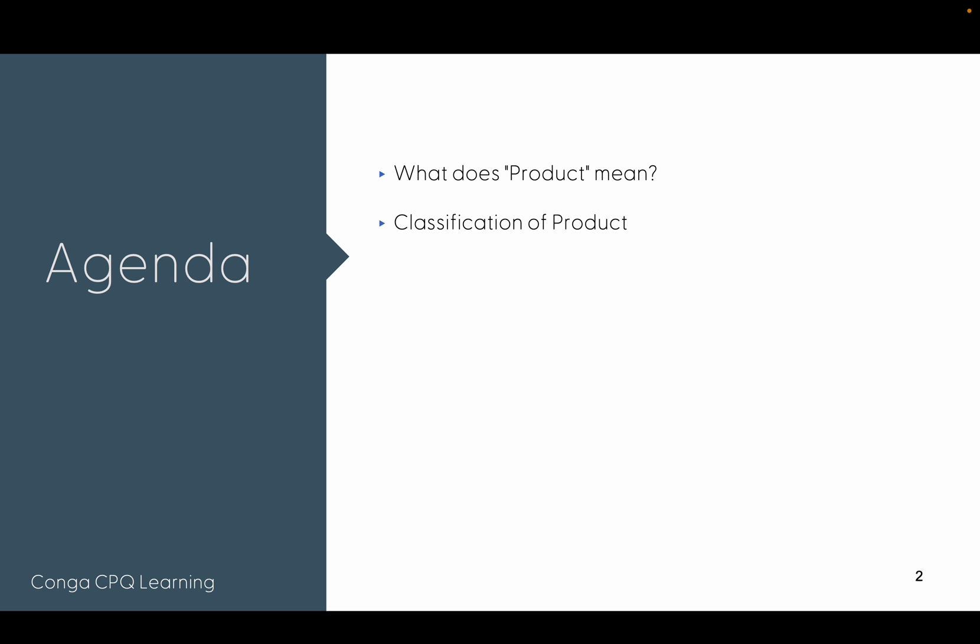Here is the agenda: first we are going to see what a product means, then the classification of products and how Conga has classified them, then how to configure them, and at the end we are going to see the live configuration.